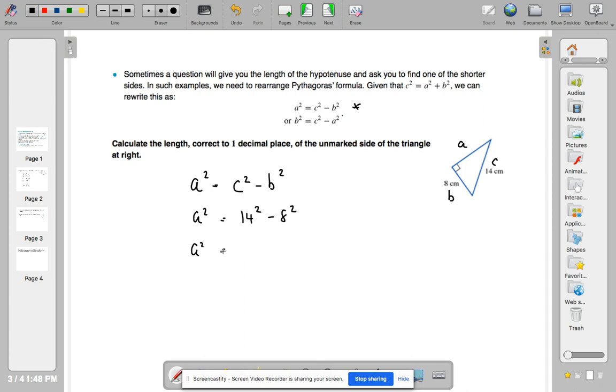A squared, 14 squared, is going to be 196 minus 8 squared, which is 64. A squared equals 132. A will therefore be the square root of 132.